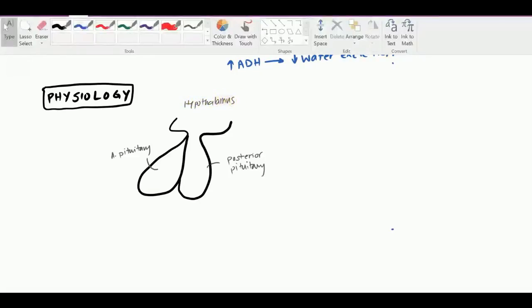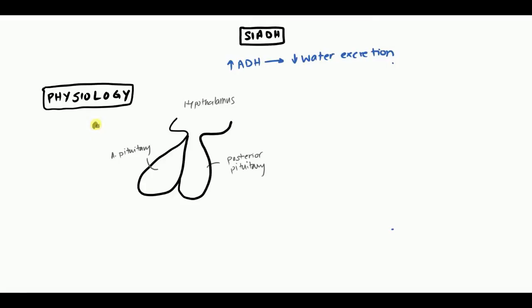So let's see what triggers the synthesis and release of ADH. We have these osmoreceptors which hook into the hypothalamus. When this osmoreceptor detects high osmolarity of the blood, the hypothalamus begins to produce ADH.